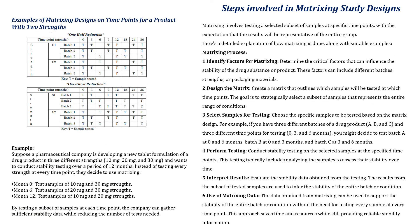Now let's dive into the world of matrixing. First, they identify critical factors like different batches, strengths or packaging materials that can impact stability. Then, they design a matrix that outlines which samples will be tested at specific time points, strategically selecting a subset that represents the entire range of conditions. For example, if they have three different batches — A, B and C — and three different time points for testing: 0, 3 and 6 months, they may decide to test batch A at 0 and 6 months, batch B at 0 and 3 months, and batch C at 3 and 6 months. By conducting stability tests on this subset and analyzing the results, they can infer the stability of the entire batch or condition without testing every sample at every time point.